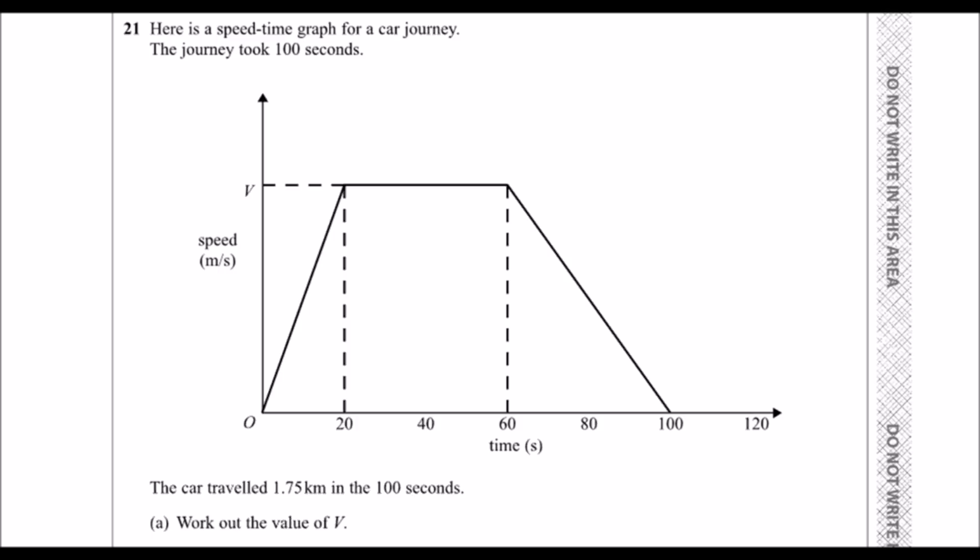Here is a speed-time graph for a car journey. The journey took 100 seconds, we can see that from the graph. The car traveled 1.75 kilometers, so we've got a problem with units here. We've got meters per second here, kilometers here, so we're going to need to make them the same.